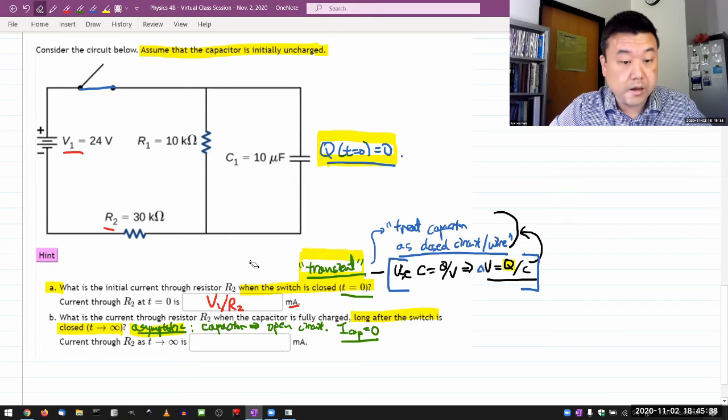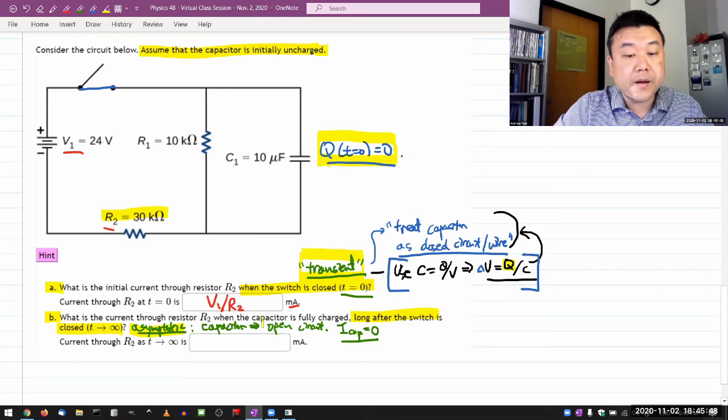So, now part B, it asks what is the current through the resistor R2 again, when the capacitor is fully charged long after the switch is closed. Okay, so, let me write down the very first thing I know,